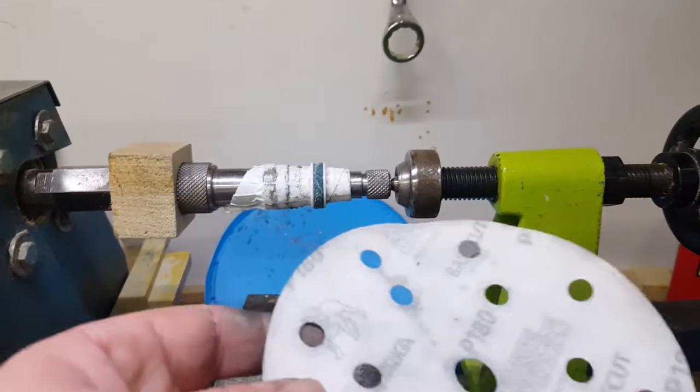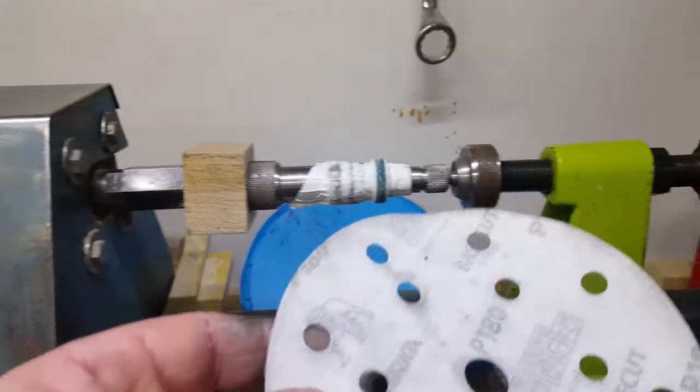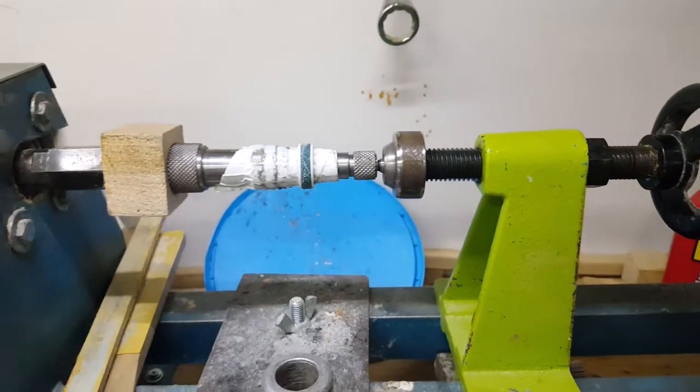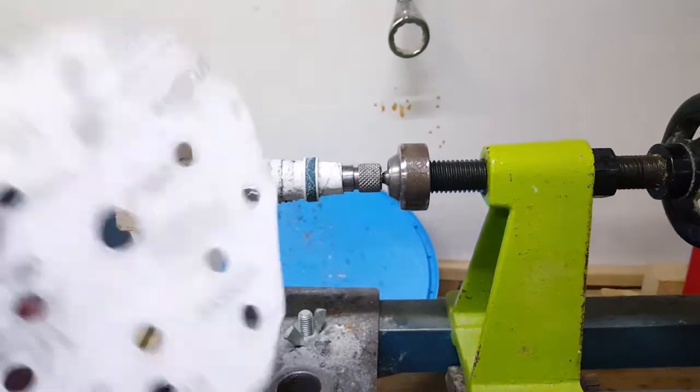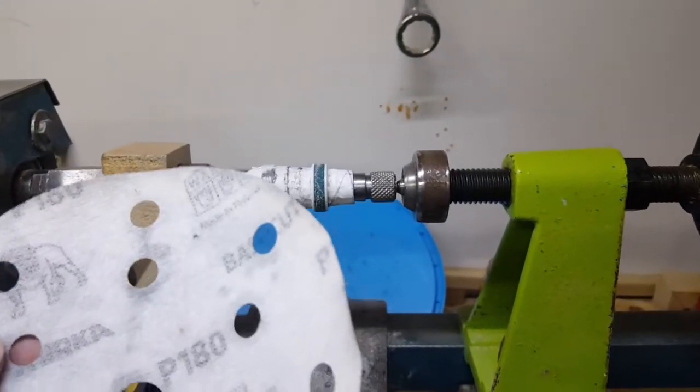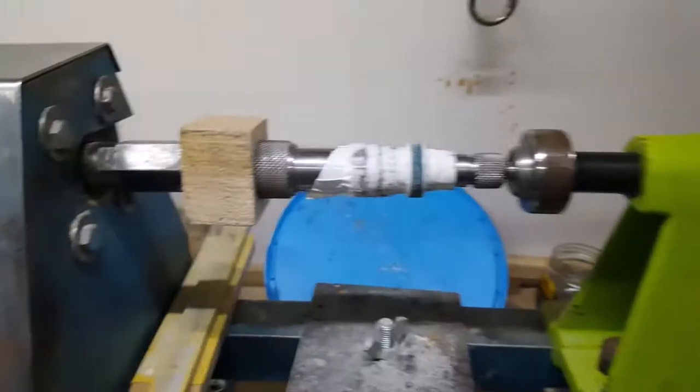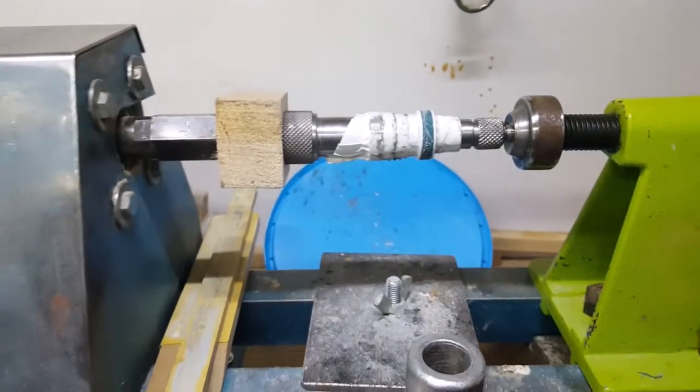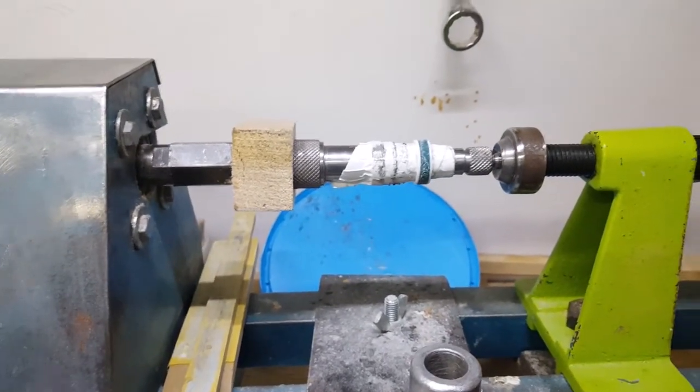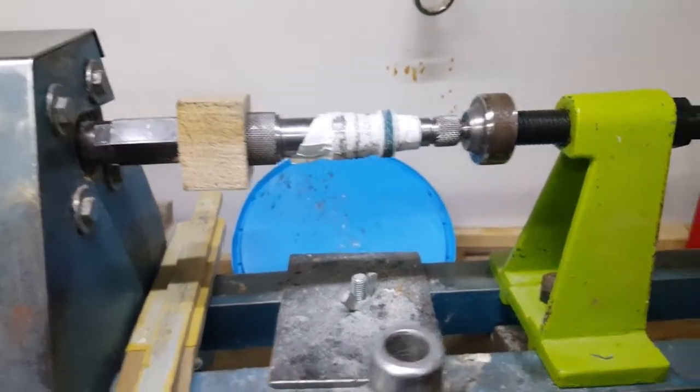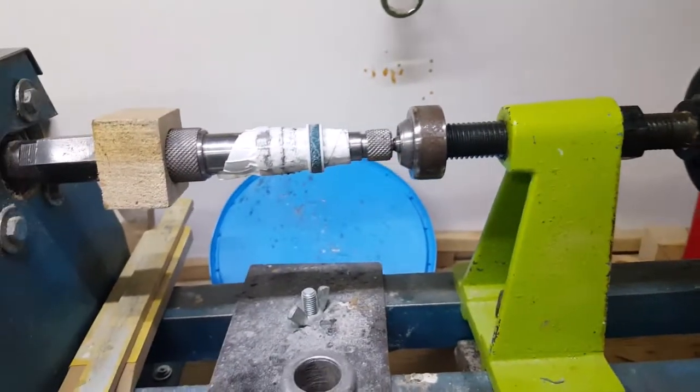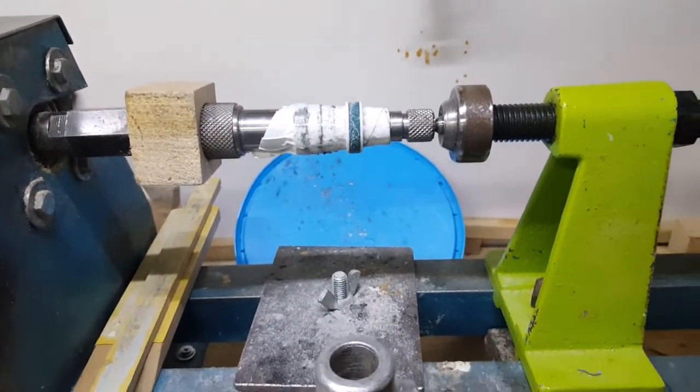The sanding grits I use - on the sticks it's 120, so from 120 up to 3000. And if I need it, I can go up to about 12,000 I think.